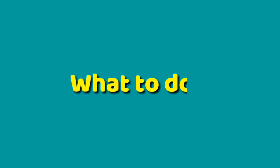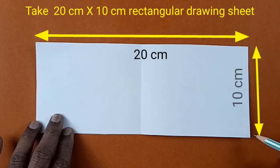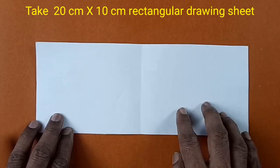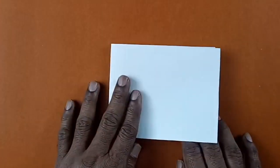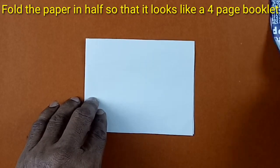What to do: Take a 20 cm by 10 cm rectangular drawing sheet. Fold the paper in half so that it looks like a 4-page booklet.